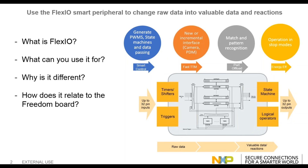The intelligence part of FlexIO — what makes it smart — is that it can do state machine functions or logical operations based on data as it comes in. The FlexIO peripheral is built from input and output pins, timers and shifters, triggers, state machine, and logical operators. As data comes in, you time and store it; that's how the timers and shifters work. Getting back to this contest with Hackster, why is it built on the Freedom K82F?